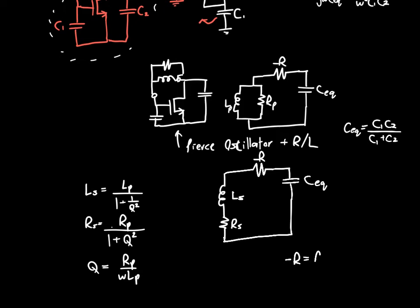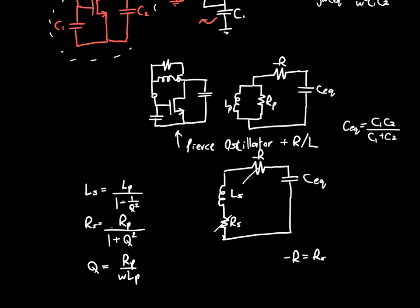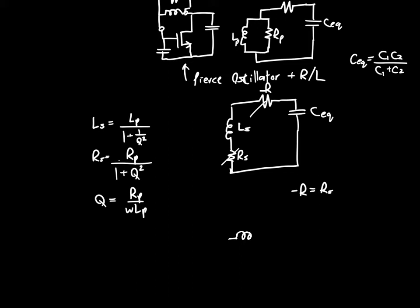And so, as long as negative R equals RS, then the two resistors cancel, and we've got a perfect LC circuit. So, we've got our standard just L and C. And we know that this circuit oscillates with a frequency of omega naught equals 1 over square root of LC. So, all we need to do is ensure that this transformed resistance, RS, is canceled out by the negative resistance minus R of the Pierce oscillator. And, that is what a Colpitts oscillator is.